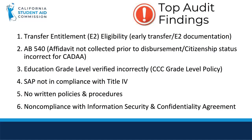The AB 540 affidavit finding can involve a couple of different issues. Schools may not be collecting the affidavit. One way to ensure that these forms are received is to customize your roster to display the Dream App flag on the California Dream Act application records. Once you know who your Dream Act students are, you can confirm whether the affidavit was filed, and if not, you can reach out to your students to remind them of this requirement. Remember that the affidavit is kept on campus and must be provided to your auditor if requested. Another reason this may be considered a finding is if California residency was not established. Sometimes the admissions department will have different state residency verification practices than the financial aid office, so please ensure that both departments are in good communication and are sharing documents like the AB 540 affidavit if necessary.